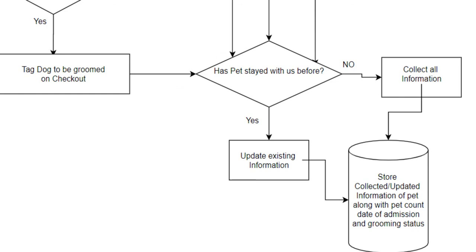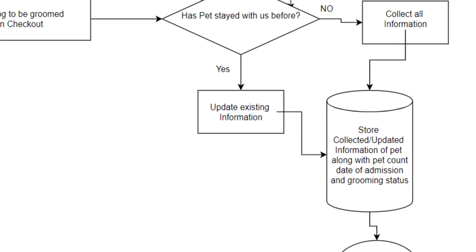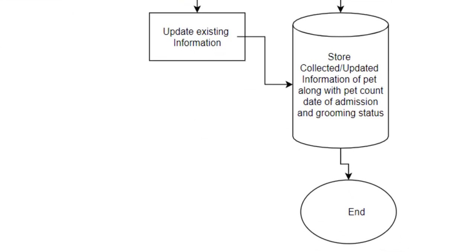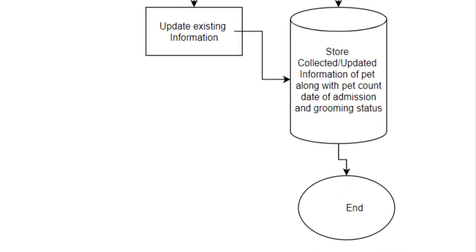If no, then you'll collect all information. If yes, you will update existing information. And with both of these, you'll store that collected updated information along with the pet count, date of admission, and grooming status. And then after all that is stored into the database, you come to the final step, which is the end of the process.